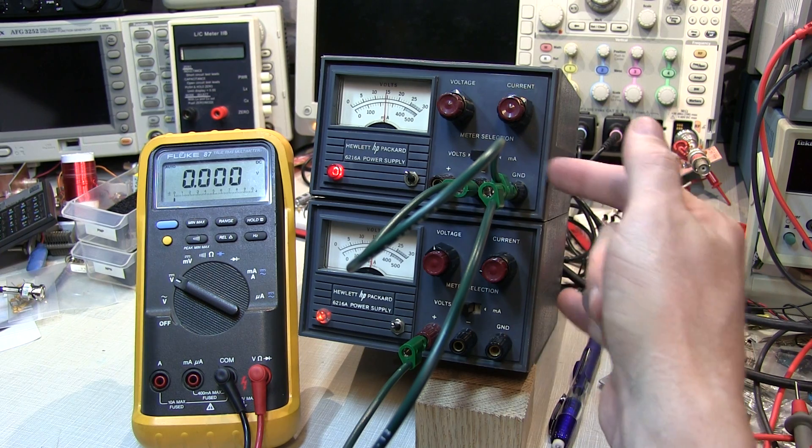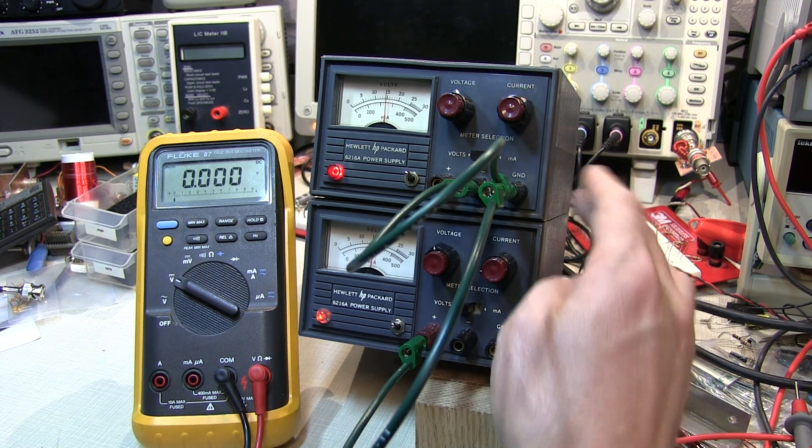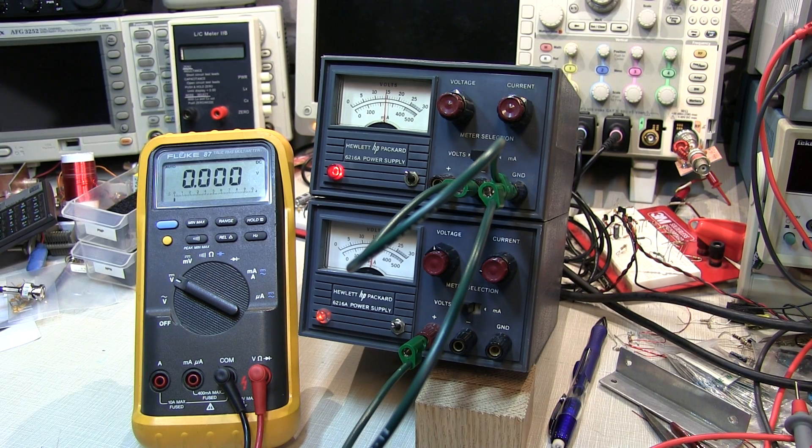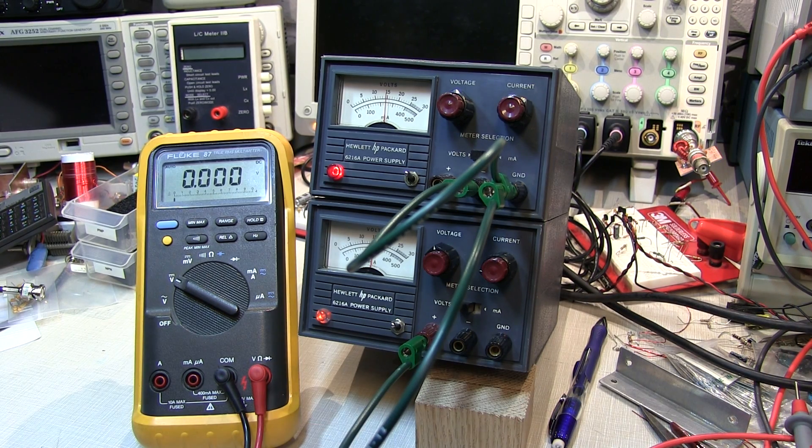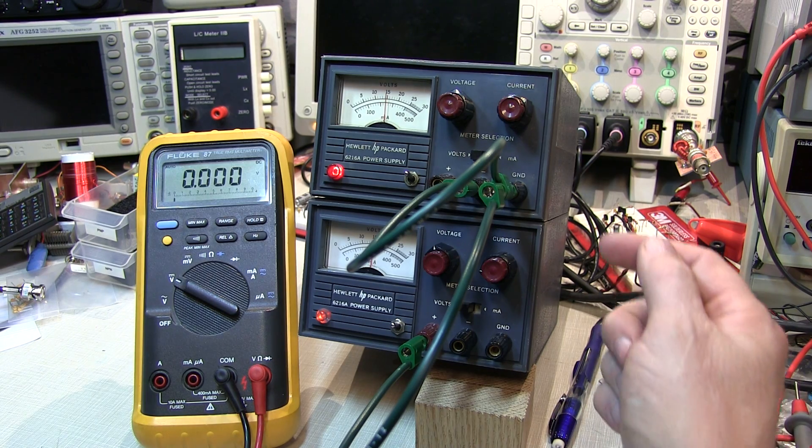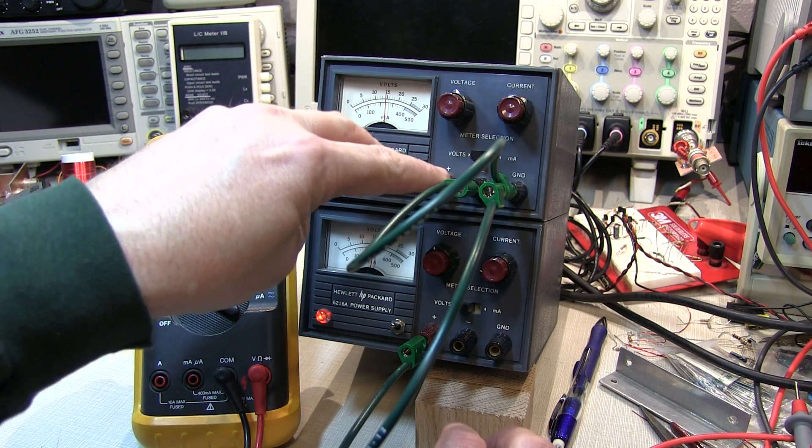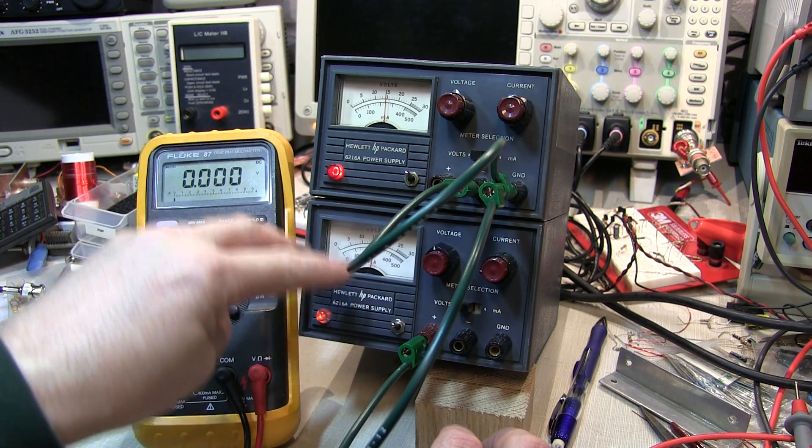So the ground terminals between the power supplies are common, but the positive and negative terminals of independent power supplies are isolated from each other and can be stacked or floated. You would have to check the specifications or data sheet for the particular power supplies you're using to determine how far that power supply can be floated above or below ground.